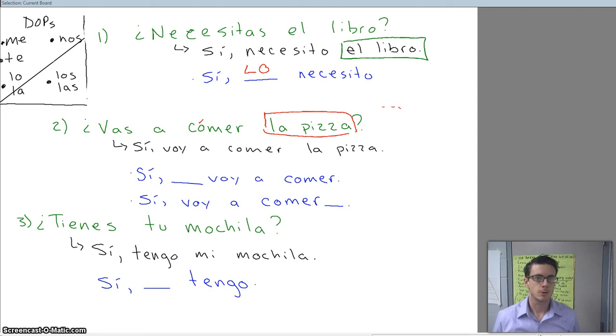So, you wouldn't answer, yes, I'm going to eat the pizza. That's really robotic. It's not very good fluency. It's not showing high competency in Spanish. So, you wouldn't answer, yes, I'm going to eat the pizza. You would say, yes, I'm going to eat it. Now we need to put that it in there somewhere.